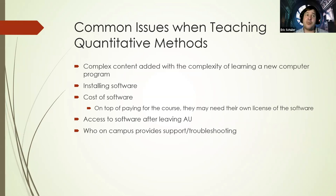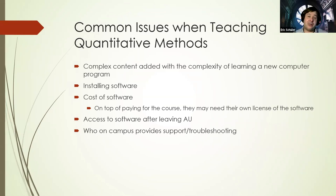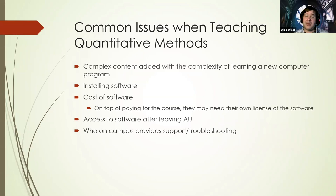There's also the cost. A lot of proprietary software can cost easily from $50 a semester to a couple hundred. Things like Stata have discounts for student licenses, SPSS has some licenses, and SAS can be really costly. So paying on top of a course, now they have to buy a copy of their own license or the software as well.